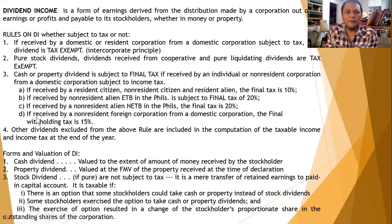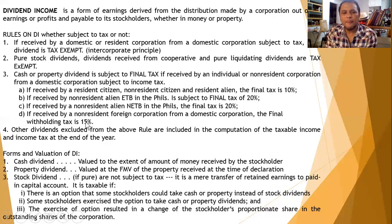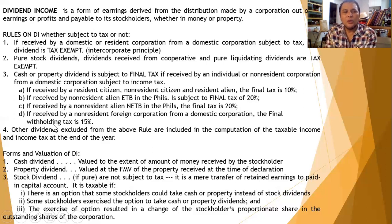Fourth — if the recipient is a non-resident foreign corporation, the final withholding tax is 15%. So the rates to remember are: 10%, 20%, 20%, and 15% — where 15% applies to non-resident foreign corporations.